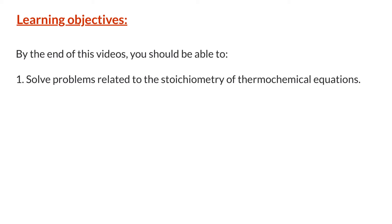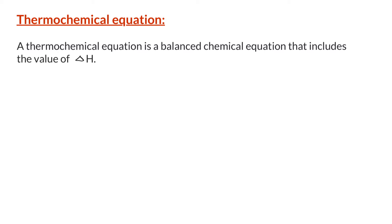Hello everyone. In this video we will learn to solve problems related to the stoichiometry of thermochemical equations. A thermochemical equation is a balanced chemical equation that includes the value of delta H in the equation. For example, 1A plus 2B gives 3C, and the enthalpy change for this reaction is minus 100 kilojoules per mole of A. This is an example of a thermochemical equation.